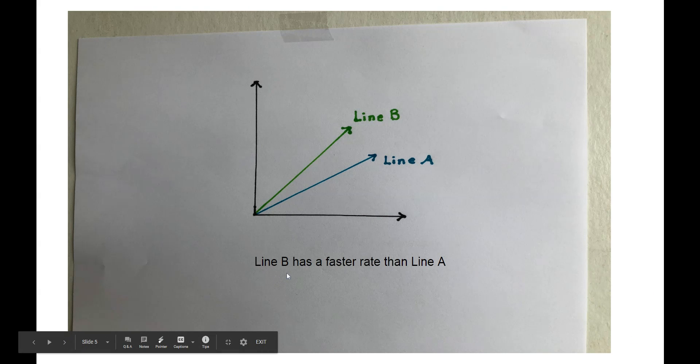Line B has a faster rate than line A. We know this because line B is steeper than line A.